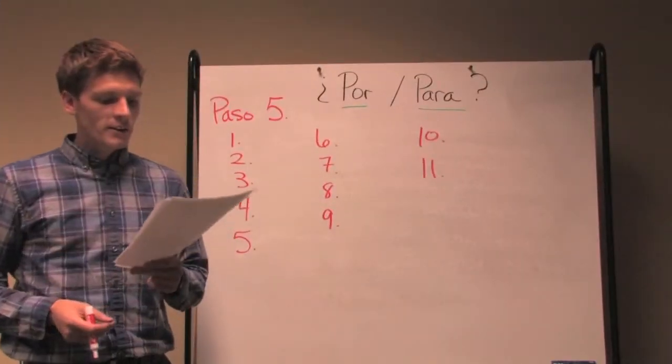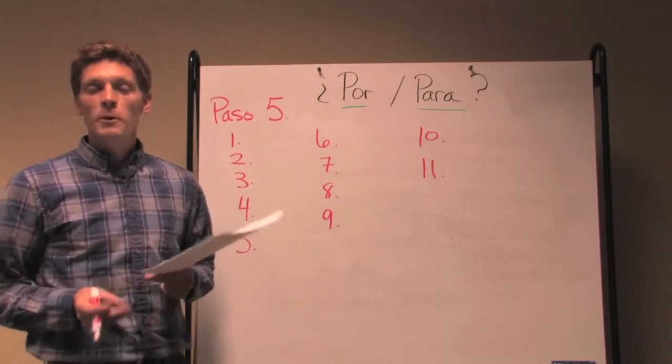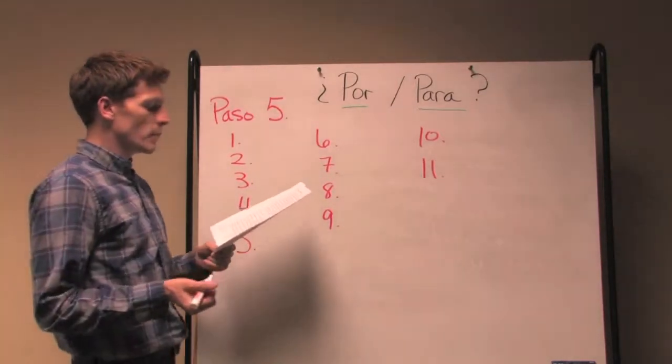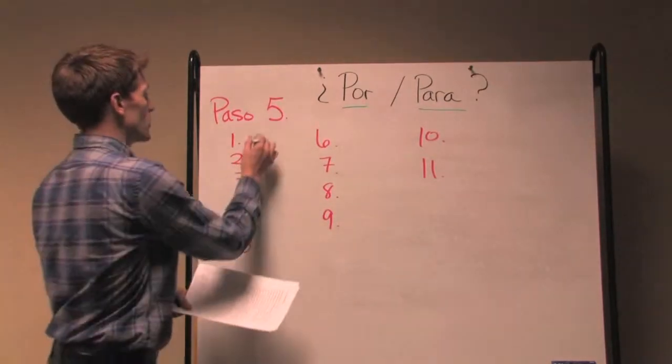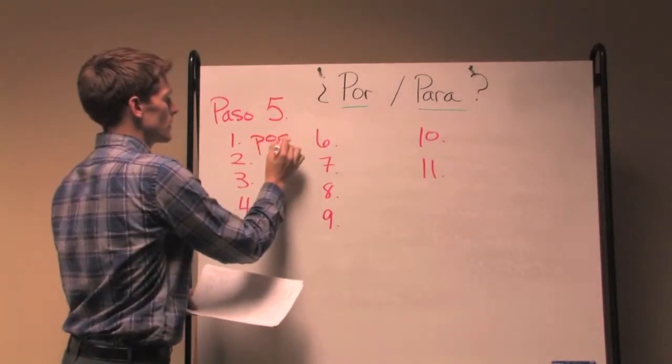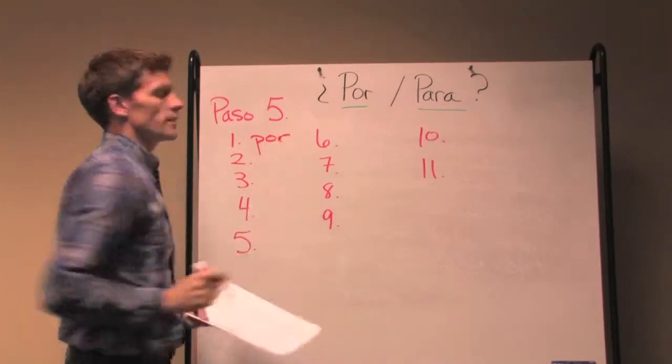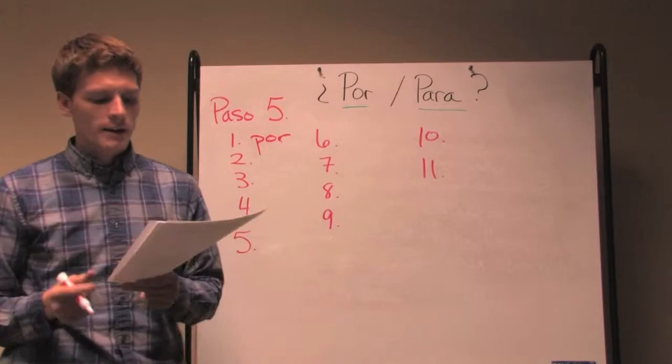Let's go through these one by one quickly and decide por o para and kind of hit on the why of each one. So for the first one, se pueden comprar muchas cosas por poco dinero. Por, in this case, por poco dinero is an exchange, an intercambio, right?